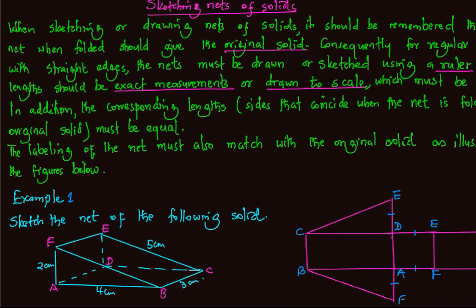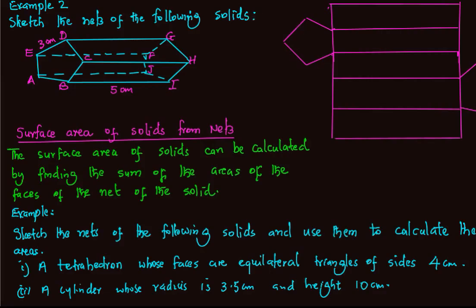And then from E, E joins to point C and F joins to point B. When this net is folded back, we get the original figure. We can do the same for the second example.